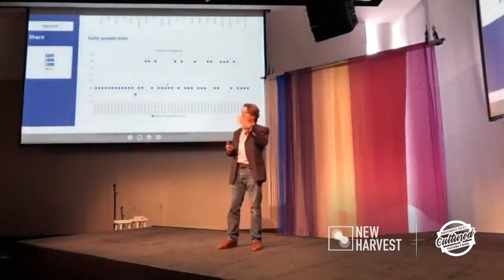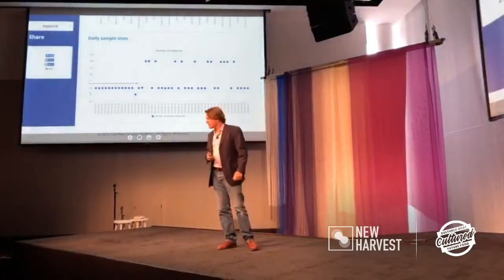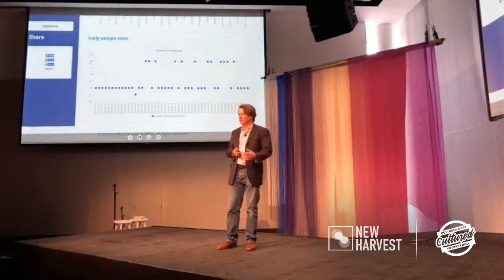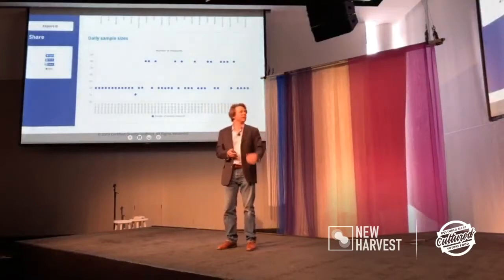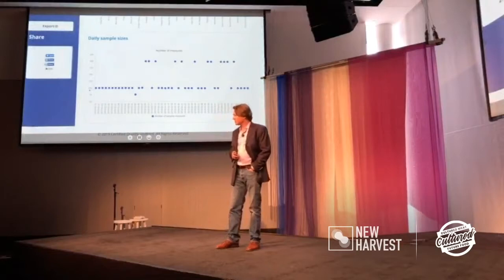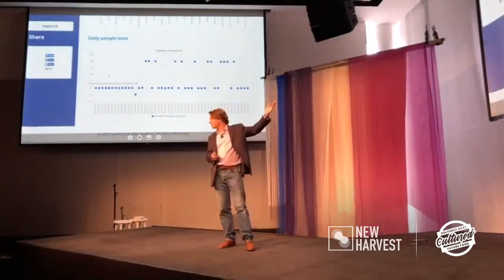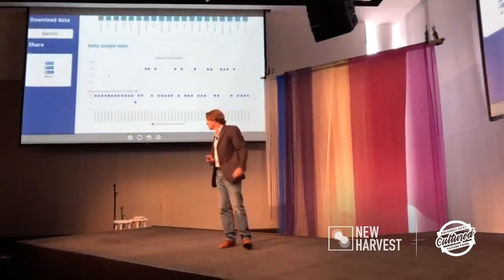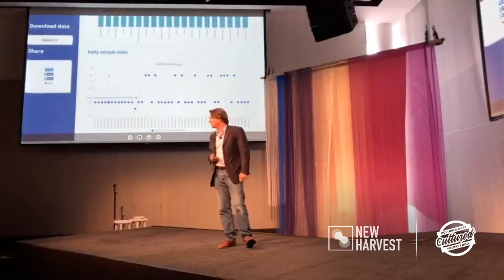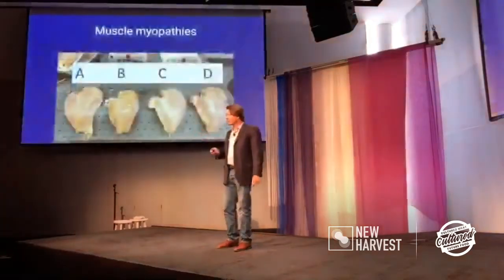If you reject an order or think you have a problem with it, the next thing you're going to ask is: what was the sample size? You don't want somebody to say three, because then you've just rejected 50,000 pounds of fish based off of three samples. So we have an instantaneous in-row count, so you can see your sample sizes and how many measurements were taken.